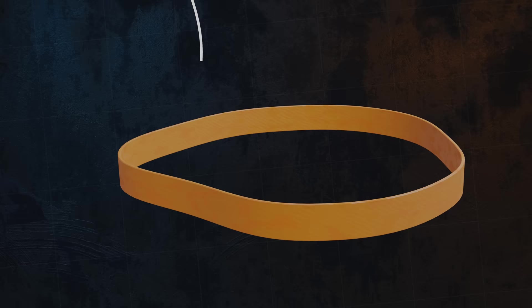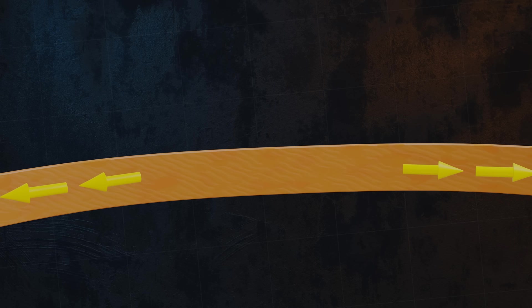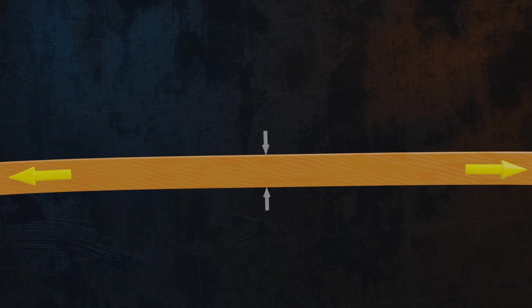We can start with a quick example, the rubber band. If you take a rubber band and stretch it along its length, its length will obviously increase. But it is also quite intuitive that at the same time, the band will get thinner. Poisson's Ratio can tell us how much thinner the band is going to get.